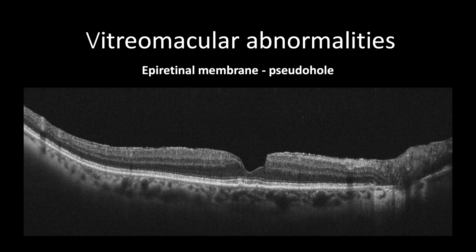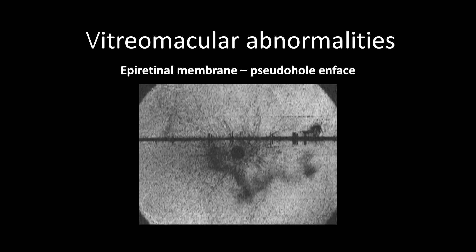In advanced cases of epiretinal membrane, a pseudo-hole may be formed, which appears as verticalization of the fovea, reshaping it in a U or V shape, with increased retinal thickness and overlying epiretinal membrane. One key feature of the pseudo-hole is that there is no lamellar defect in the outer retinal tissues; the ellipsoid zone and external limiting membrane are typically intact. One way to accurately diagnose a pseudo-hole is using en-face OCT, where the pseudo-hole will feature a circle surrounded by another smooth circle, with radial folds emanating and forming a sunflower pattern.